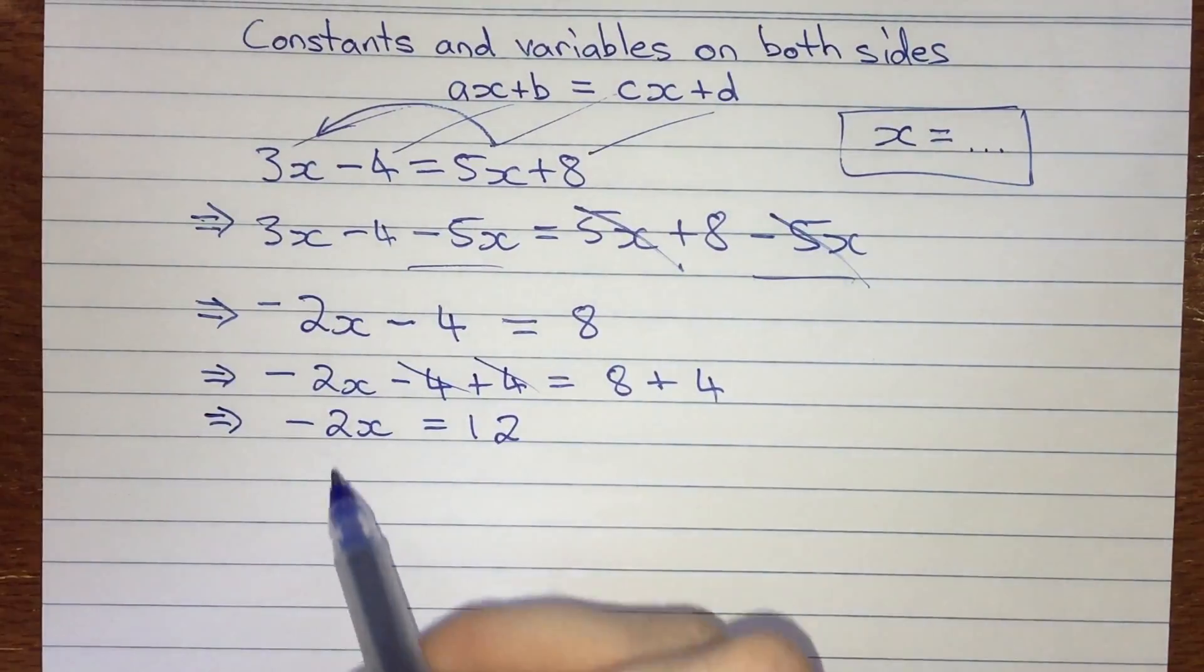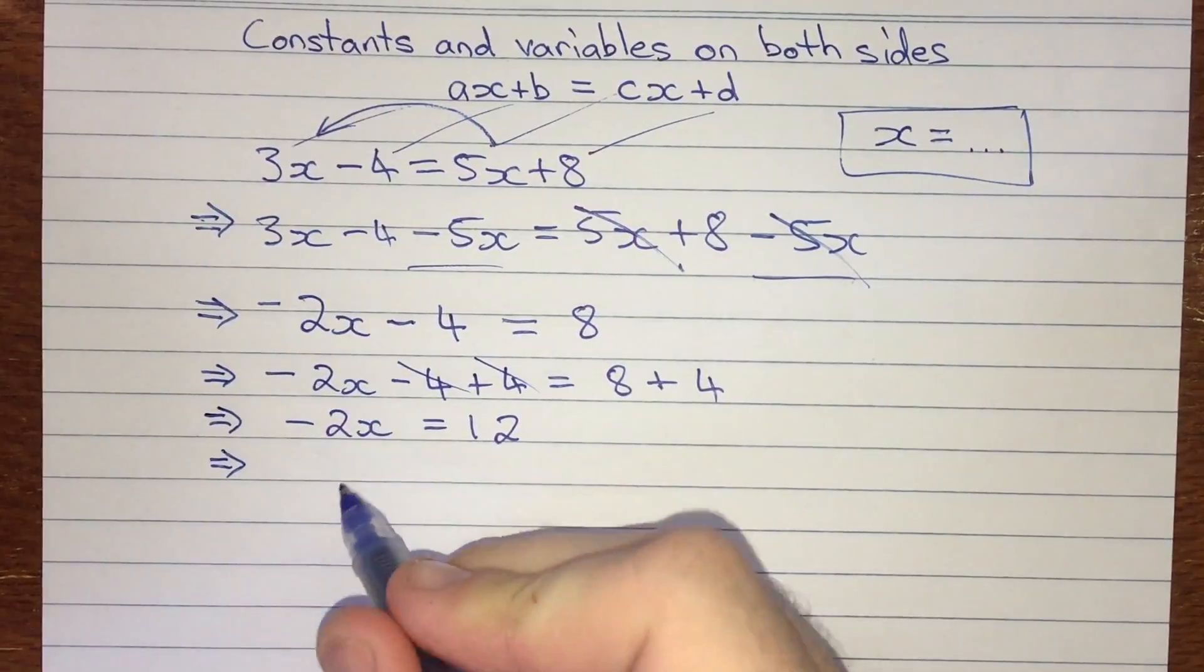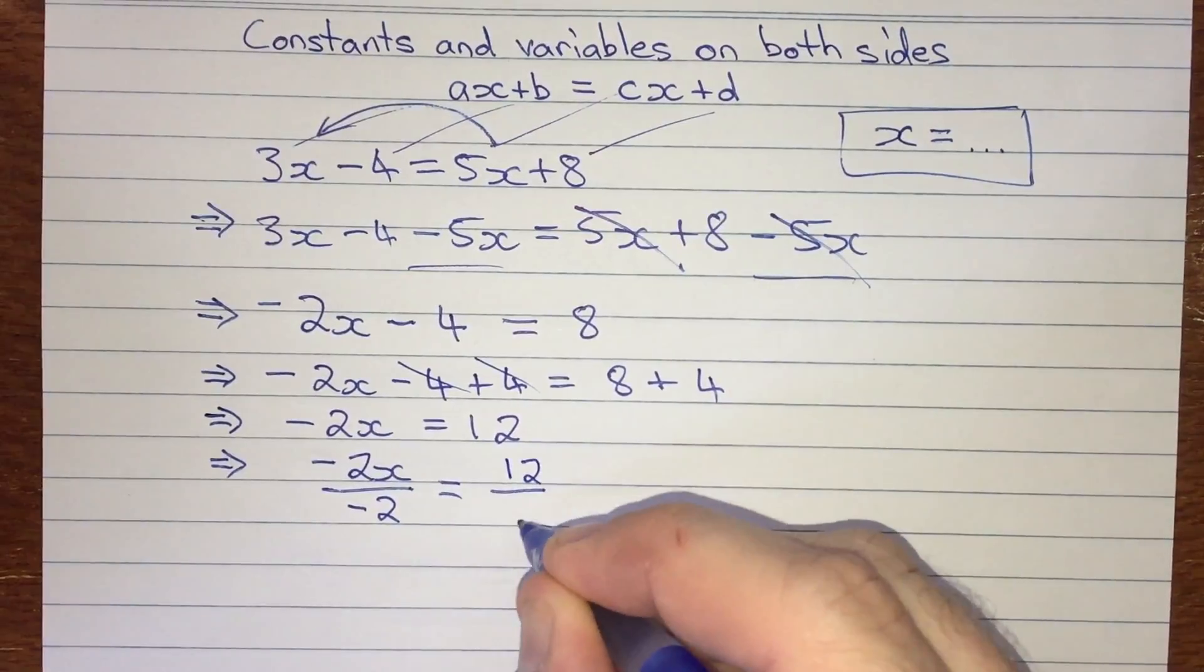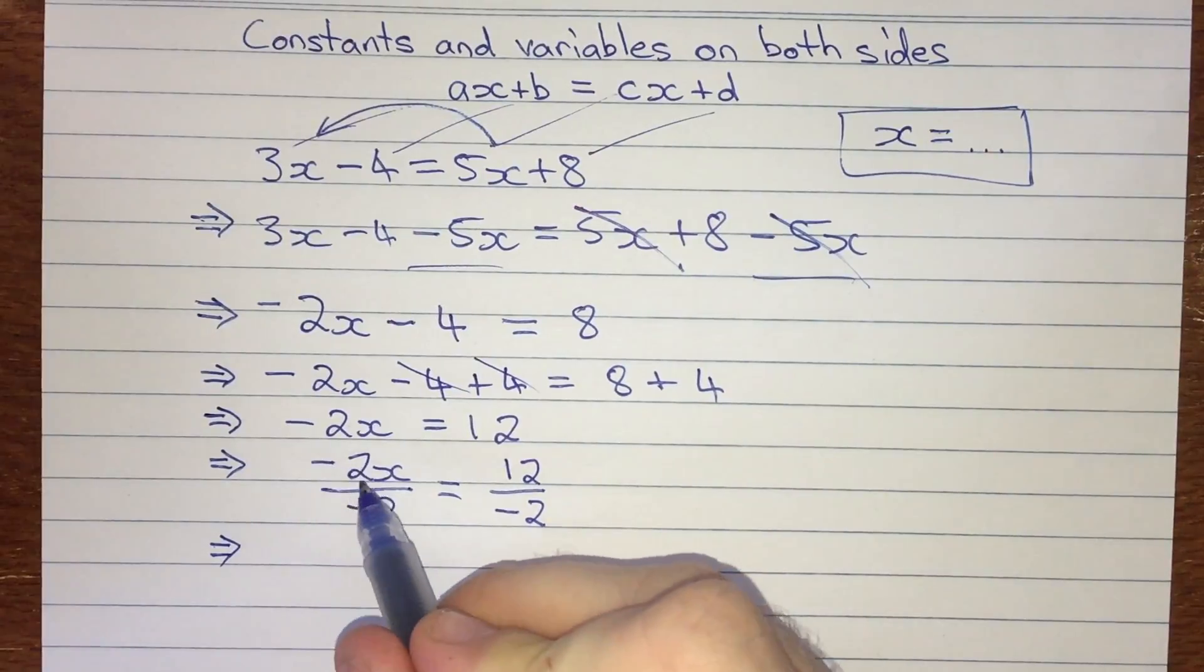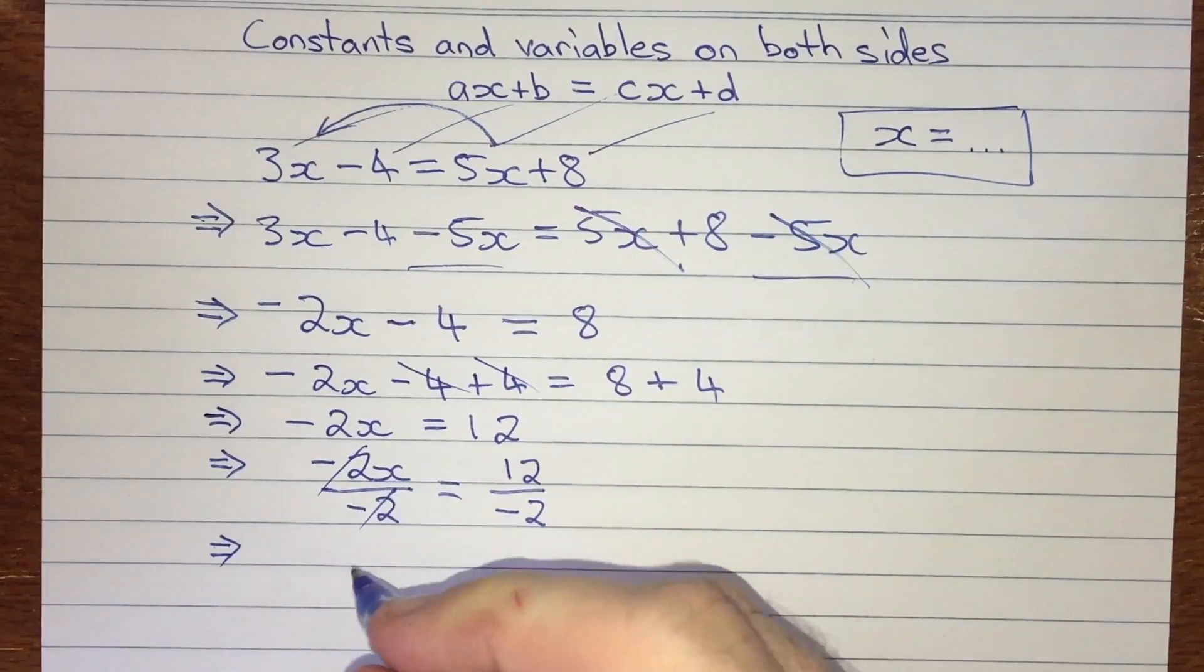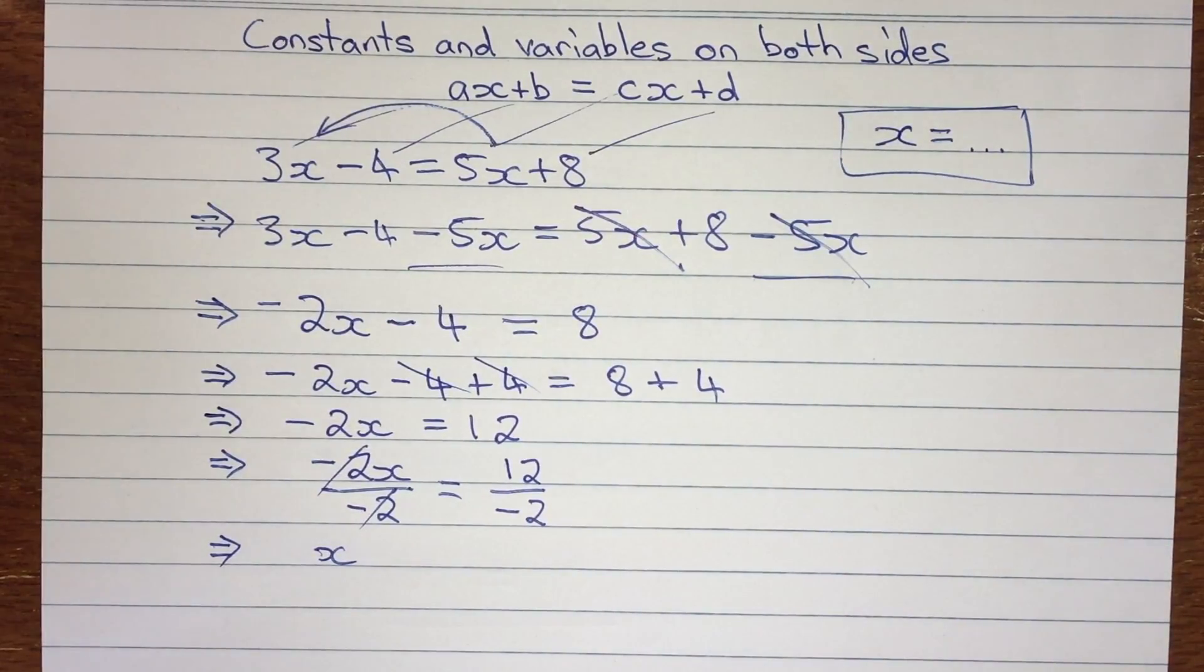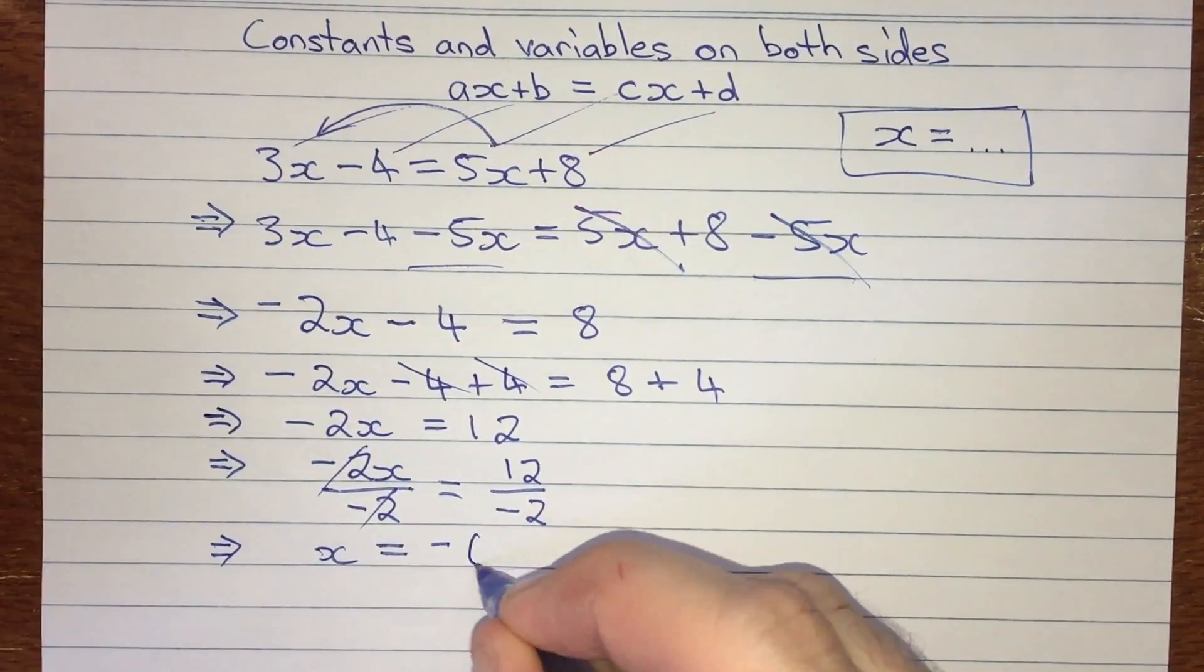And our final step now, all we need to do is get rid of this constant multiplier out the front. And we always get rid of those by dividing by exactly the same number. So minus 2x, we're going to divide by minus 2. And the same on the right side, 12 divided by minus 2. Simplifying that, minus 2 divided by minus 2 is 1. So we can basically just knock those out, and we're left with 1x. Or, as we always do, just write x by itself. On the right side, 12 divided by minus 2. Well, 12 divided by 2 is 6. We've just got a minus in there, so we're going to get x equal to minus 6.